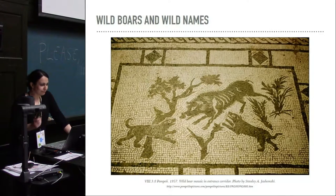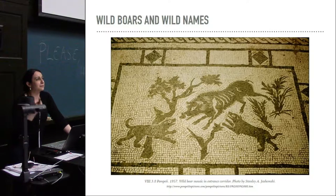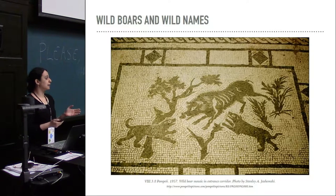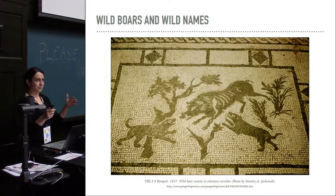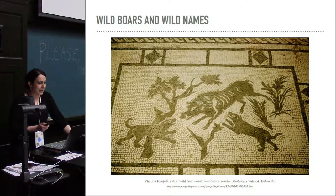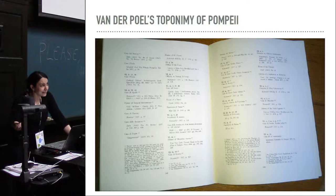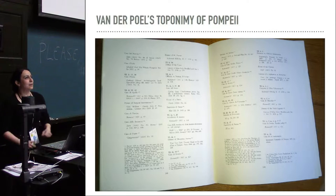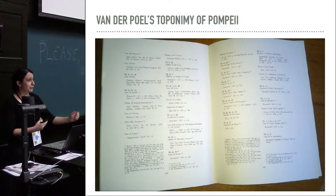Pompeii is never easy. There were two completely different, completely unrelated houses that were both called the House of the Wild Boar at different moments. And even the numerical code that Fiorelli developed — the one that divides Pompeii into regionals, insula, and numbers — even that one was changed at a certain point. So 1.2 used to be 2.1 or something like that. You cannot trust even that. And luckily we have a compass to navigate this mess, which is the naming conventions in Pompeii — or better, the lack of any naming convention in Pompeii.